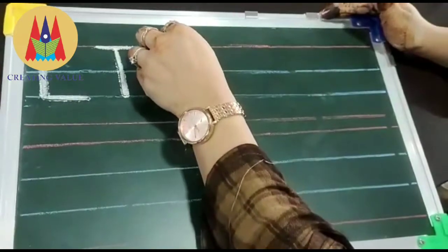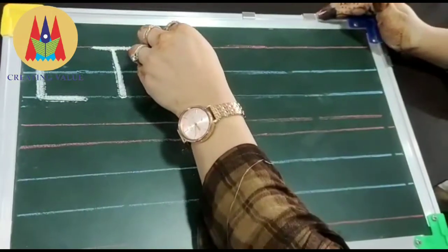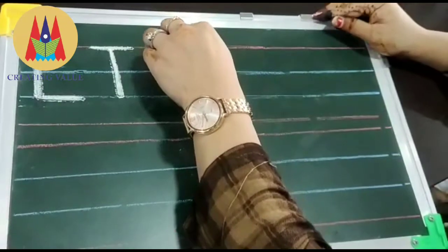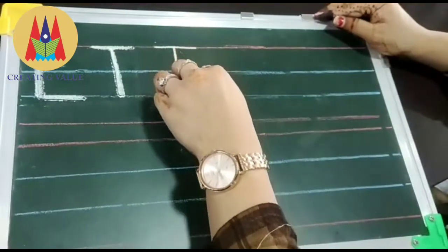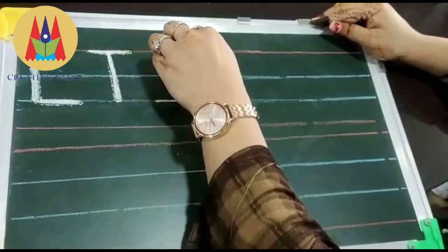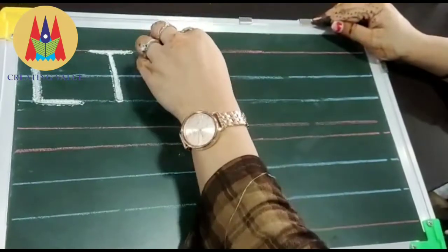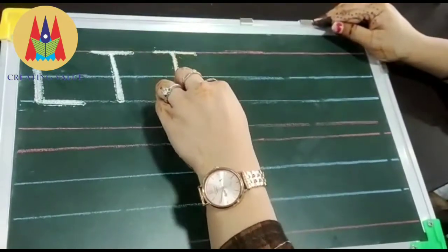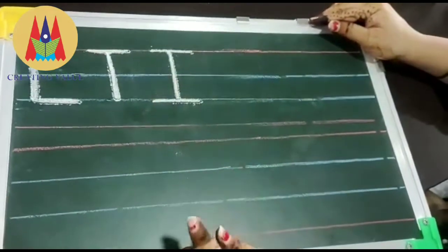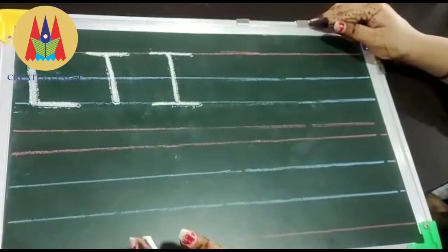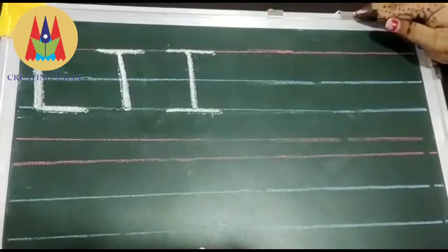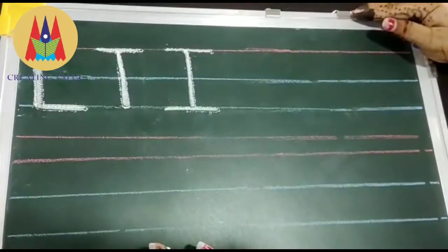Our next alphabet is I. I for ice cream. Sleeping line, standing line, sleeping line. In red sleeping line, red to blue standing line, and in blue sleeping line. I for ice cream, I for ink pot and I for iguana.